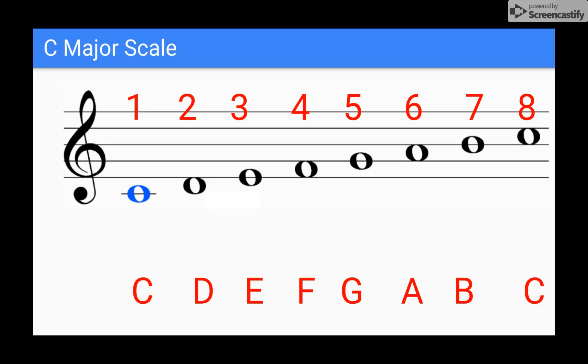So if we look at our C major scale, we know C major starts on C and ends on C, and then we go alphabetically changing notes as we go up: C, D, E, F, G, A, B, C.